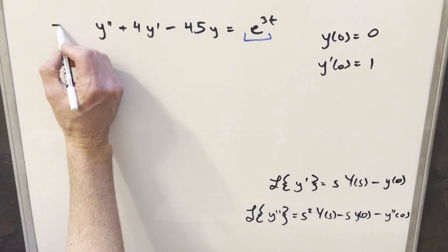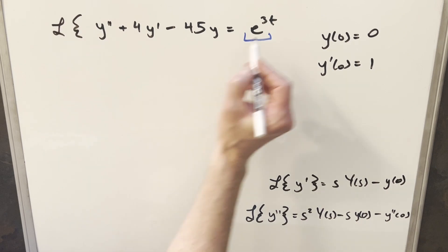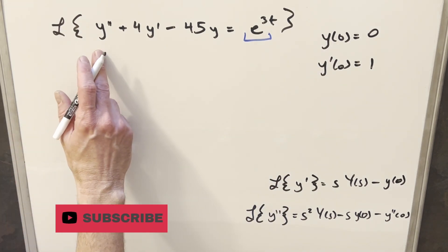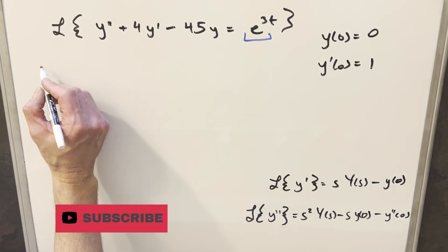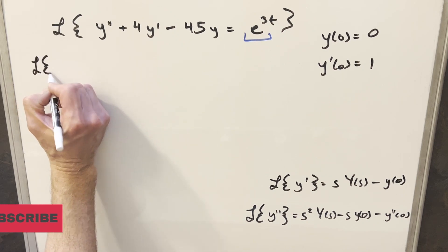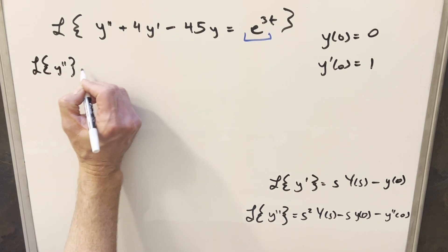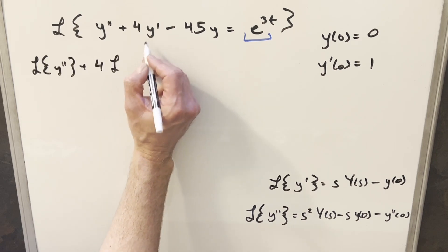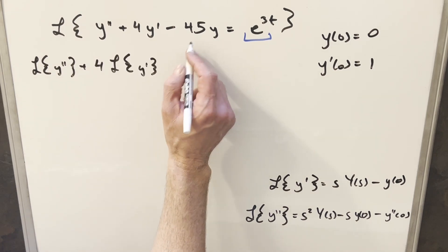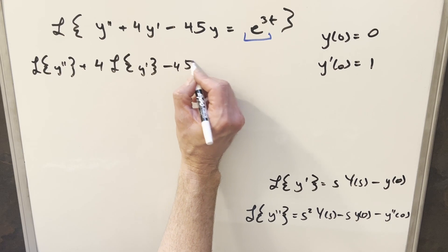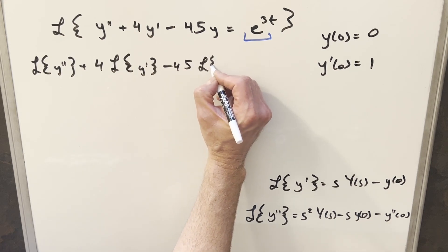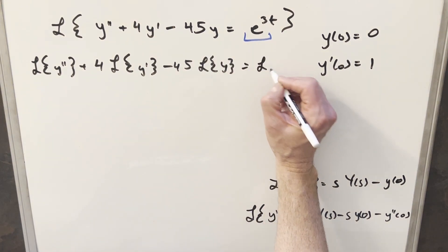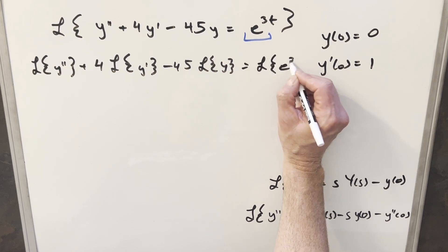Like we've done in previous videos, we just want to take the Laplace transform on both sides of this. So I'm going to split this up on the plus and minus signs. We're going to have Laplace of y double prime, plus 4 times Laplace of y prime, then minus 45 times Laplace of y. And the right side is going to be the Laplace transform of e to the 3t.